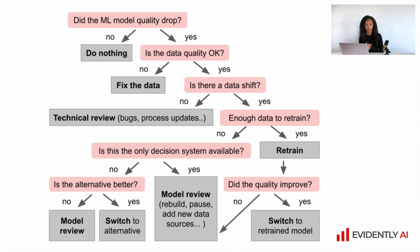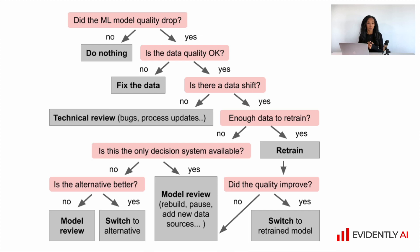For instance, you can come up with something like this. First, we measure whether the model quality has dropped. If it did, it is important to check the data quality, because in most cases model quality drops because of input data. Next, check the source of data quality issues — is there a data drift? Do you have enough data to retrain? And we can add checks like whether we have other systems to switch on, such as other models or rule-based systems, and whether those alternatives are better in terms of model performance.